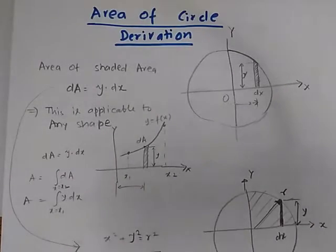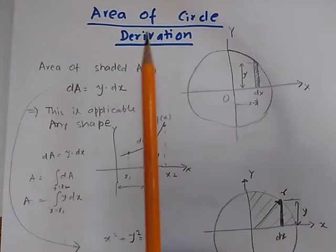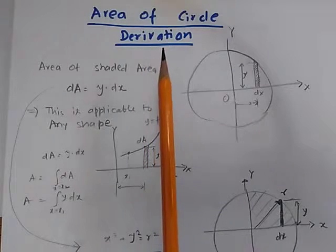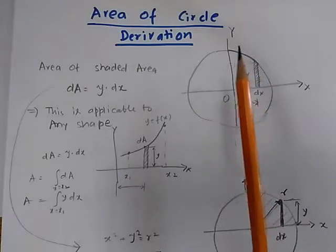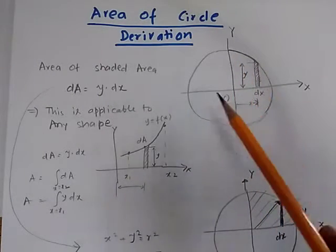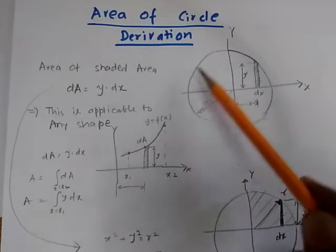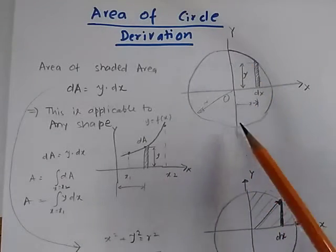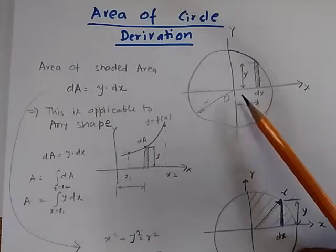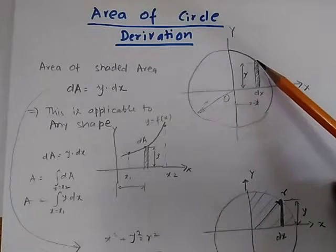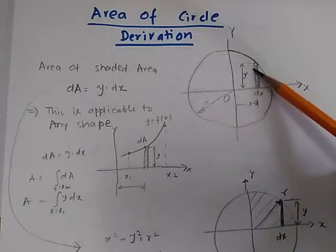We know that the area of a circle is πr² and today we are going to derive the area of the circle using integral calculus. This is our circle which has a uniform radius r, as it sweeps around the circumference. What we want to do in all such problems is find the area of a very small segment, which is what we have shown as the shaded portion of this circle.